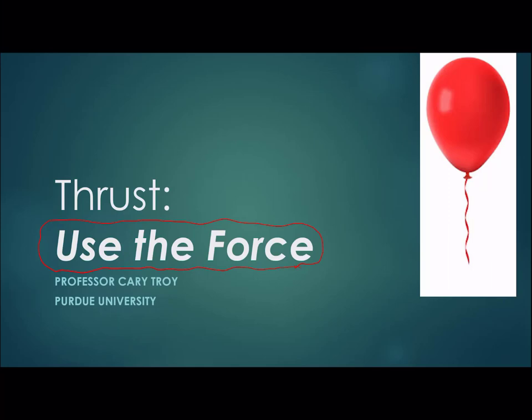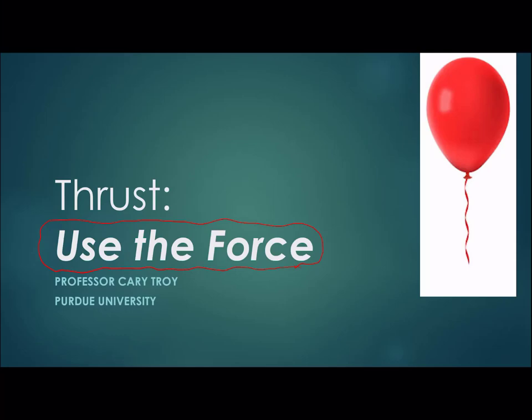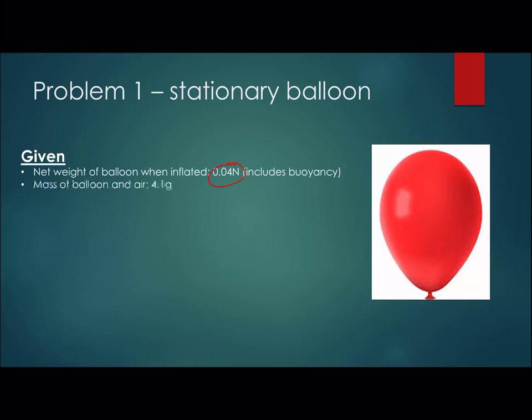Today we're not going to be looking at Star Wars items, we're going to be looking at balloons, something fun and fluffy and simple. So the problem we're going to look at first is the stationary balloon. If we have a balloon of a certain weight, so 0.04 Newtons, and that is going to be the net weight minus the buoyancy, and we know the mass of the balloon in the air is 4.1 grams, and actually the balloon in the air should weigh a little bit more when it's inflated. The balloon should weigh a little more once it's inflated than just the balloon on its own.